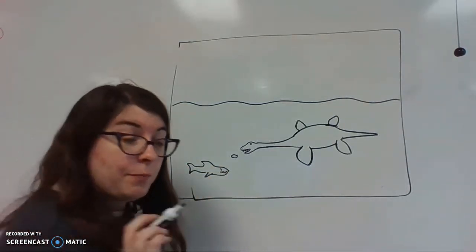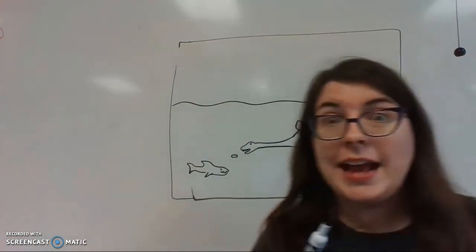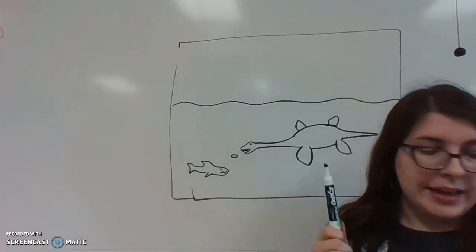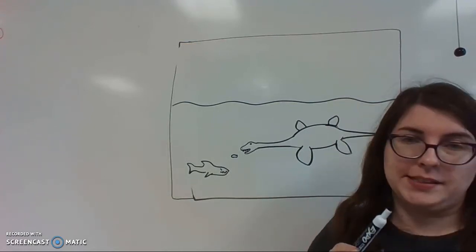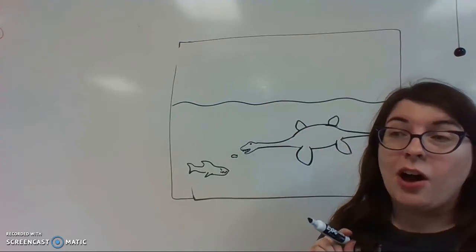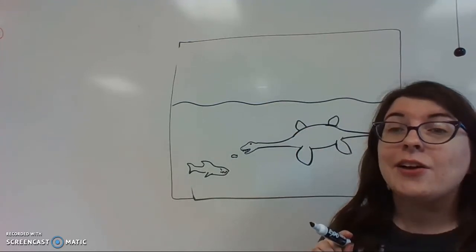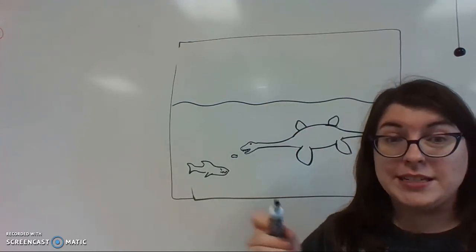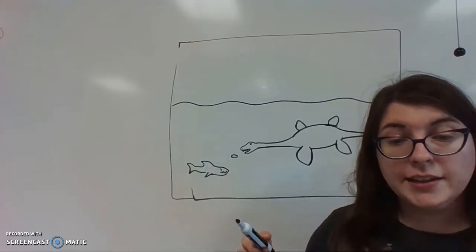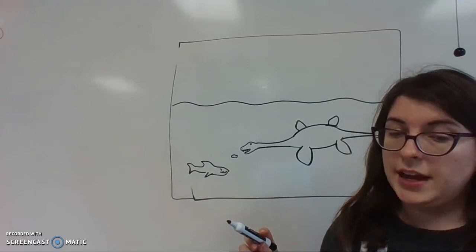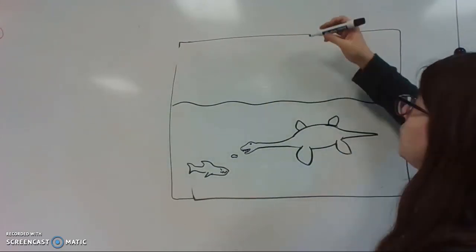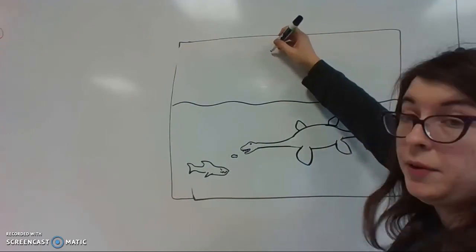But the most important thing is our next animal, our next prehistoric not-a-dinosaur that is going to be friends with our plesiosaur. And that one flies in the sky. This is called a pterodactyl. A pterodactyl is a flying reptile, not a dinosaur. But we need to start off drawing it with another circle.